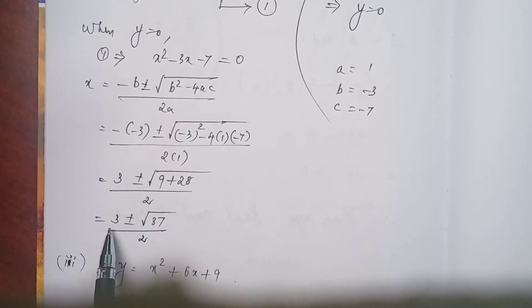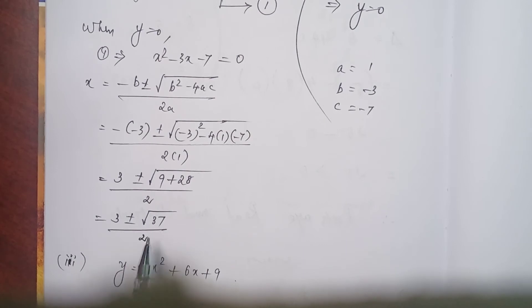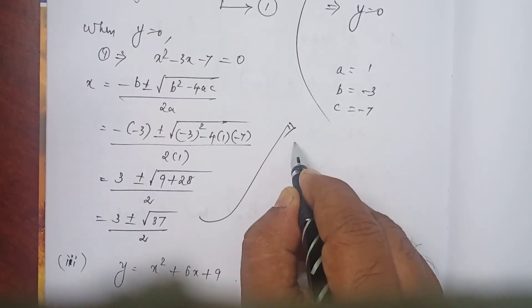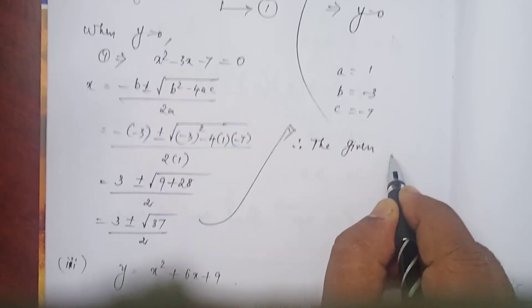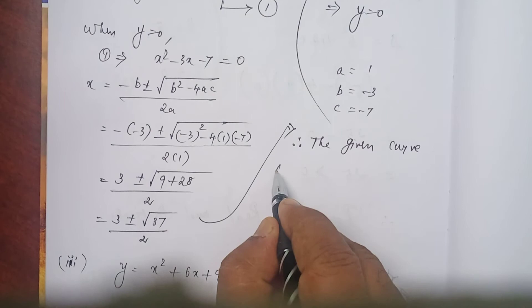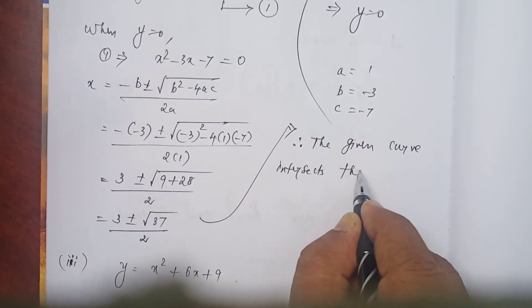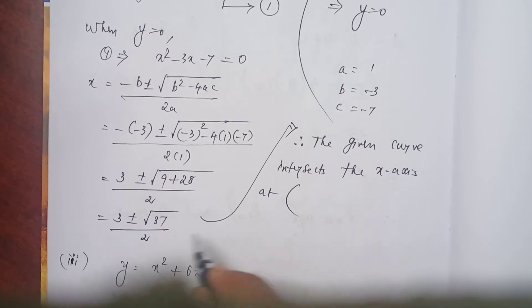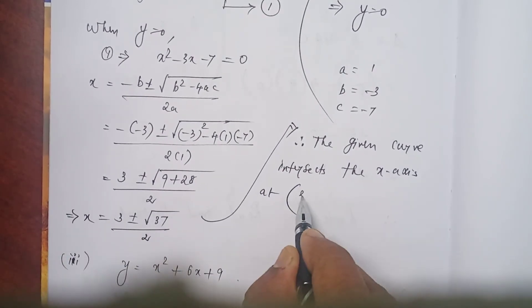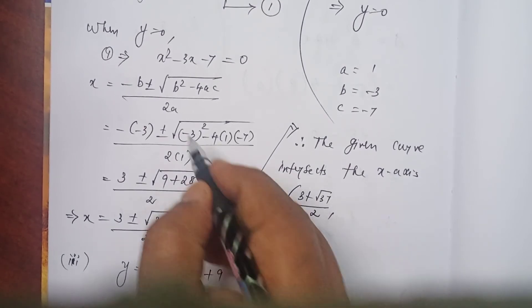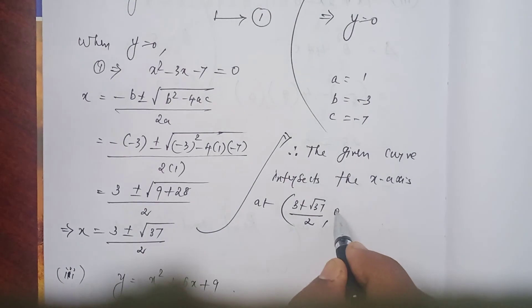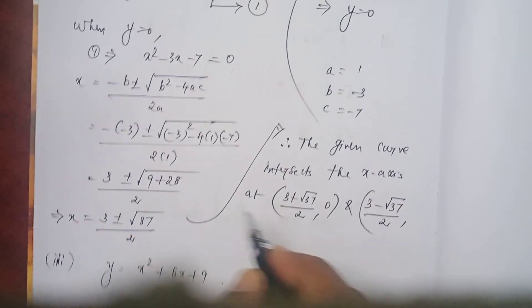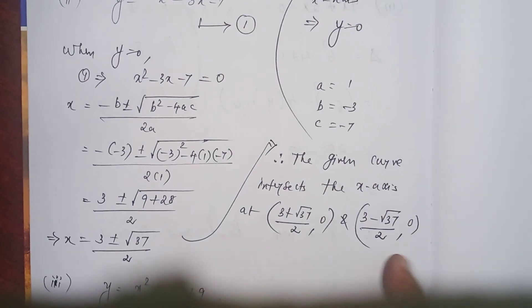We have two different values of x: x = (3 + √37) / 2 and x = (3 − √37) / 2. Therefore, the given curve intersects the x-axis at two points: ((3 + √37)/2, 0) and ((3 − √37)/2, 0).